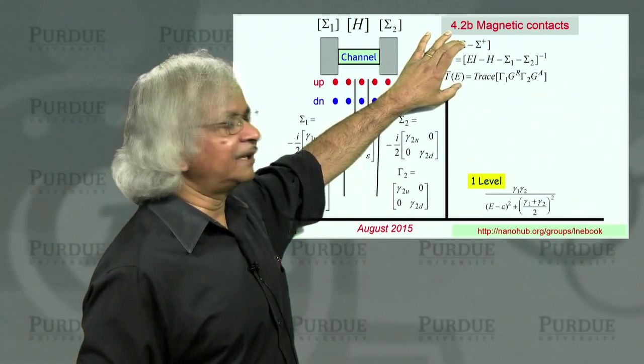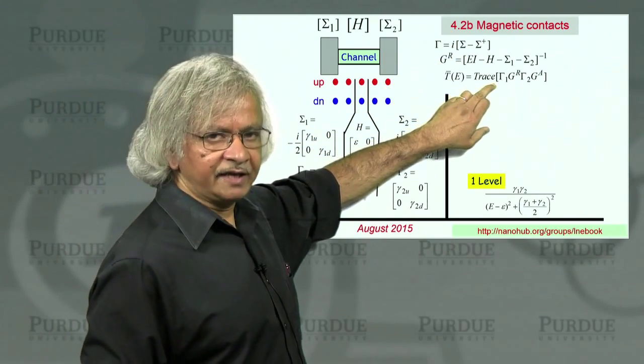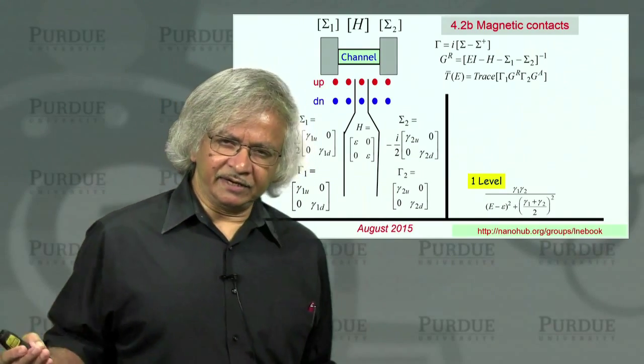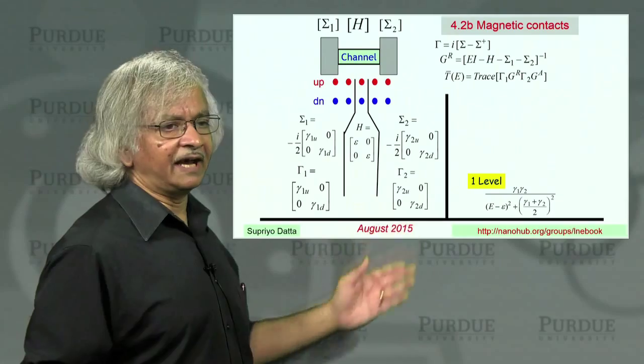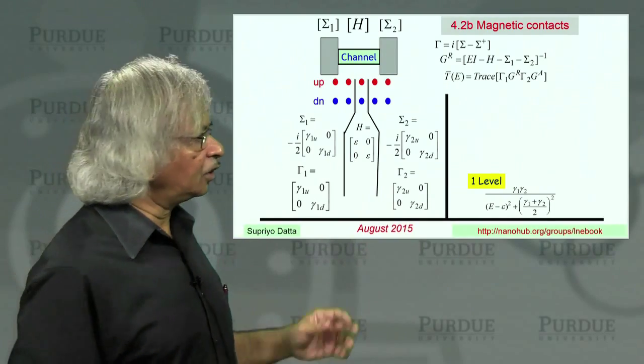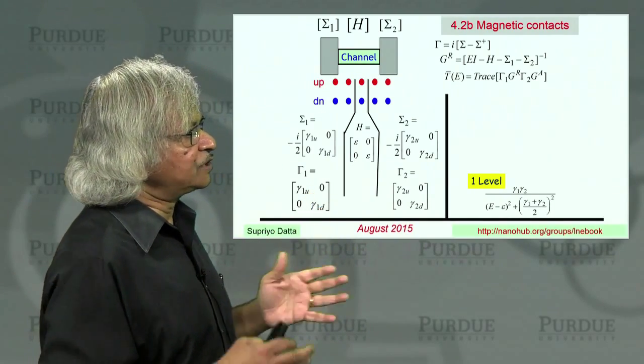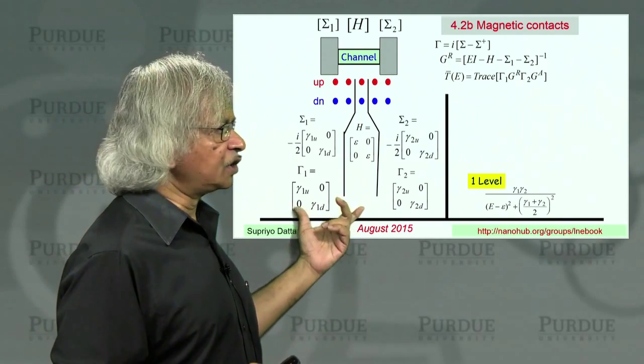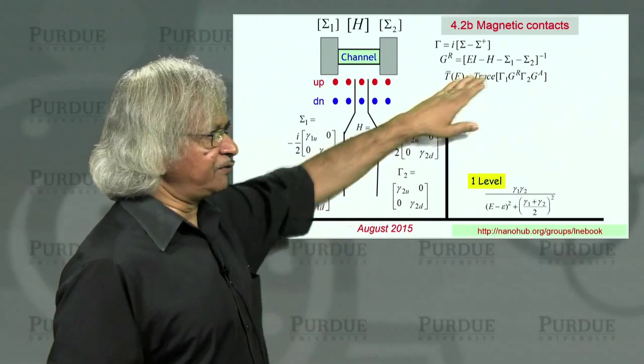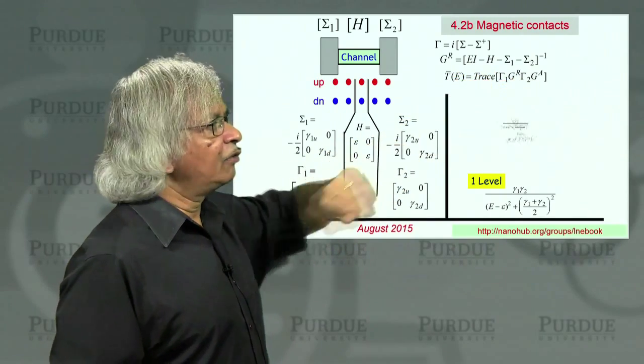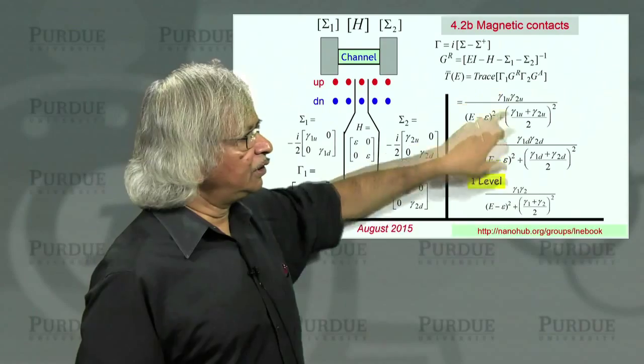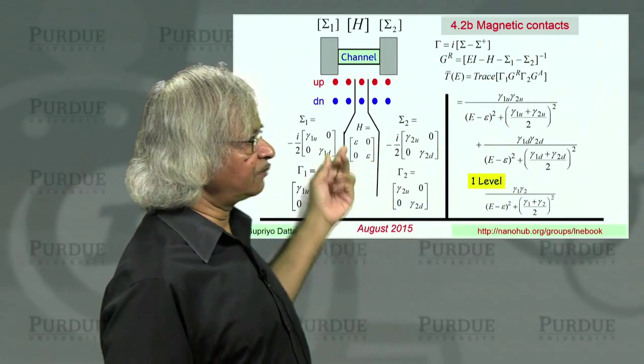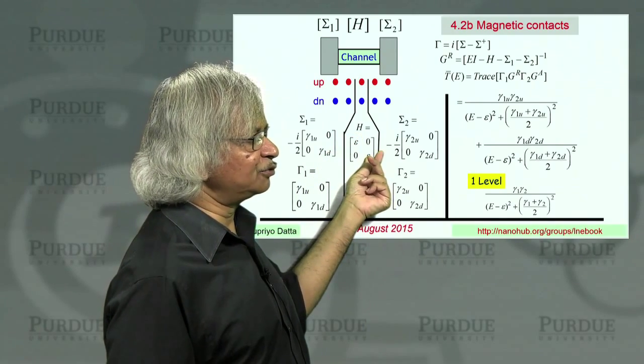And so we write gamma 1 up, gamma 1 down. Here you put a gamma 2 up, gamma 2 down. So each is now a 2 by 2 matrix. And once again, we could do the same algebra, multiply them all out and take the trace, except that here we don't really need matrices. And that's because all matrices are diagonal. So basically, all we are doing is treating two separate channels, an up channel and a down channel, and adding them up.